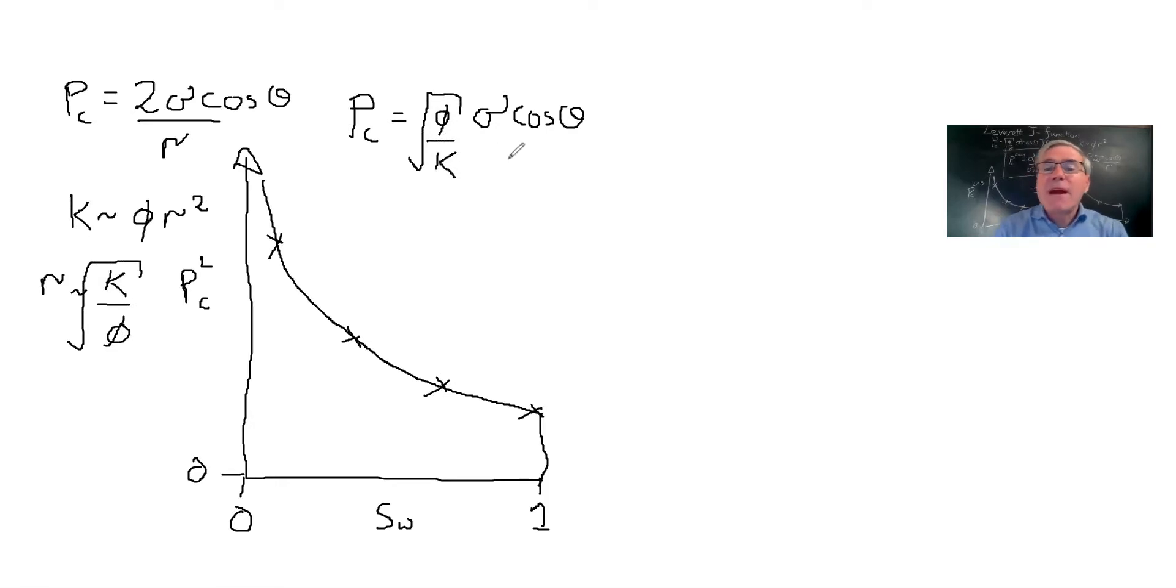So here's one over radius. So we can write φ over √k. And that's then the dimensionless form. This object here has the dimensions of a pressure, Pascals. But clearly capillary pressure is a function of saturation. So what we can write here is J of S_W. And J is dimensionless. And it is the Leverett J function.